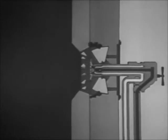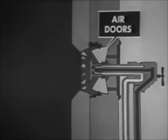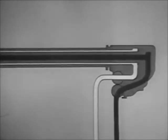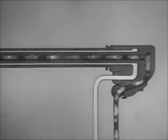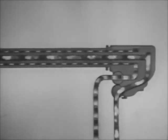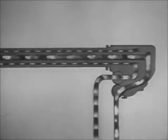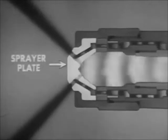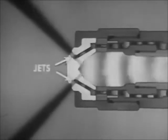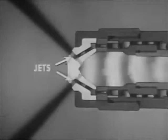The steam atomizing burner is similar in many respects to mechanical atomizing burners. It has an air register with diffuser, bladed cone, and air doors. However, the barrel of the burner has passages for both fuel oil and steam. High pressure steam passes through the central passage in the burner barrel, while oil, under low pressure, passes along outer passages. The steam heats the oil. The steam and oil mix in the sprayer plate; the mixture passes through openings or jets in the plate and emerges as a fine mist.